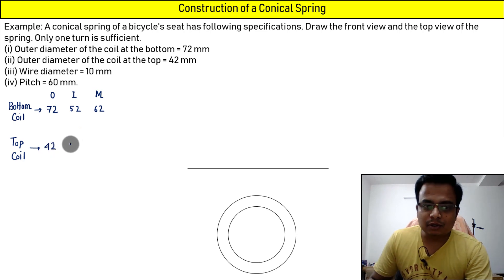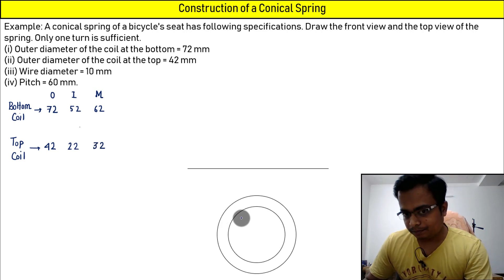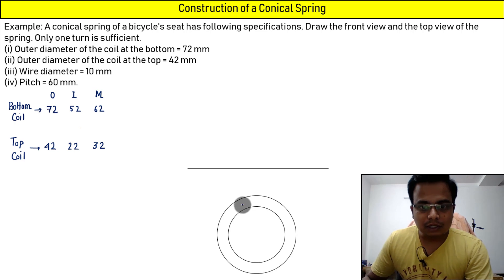This is 42. So inner is going to be 42 minus 20, that is going to give you 22. And this is going to be mean, somewhere in between 22 and 42, that is 32. That's exactly what needs to be done.